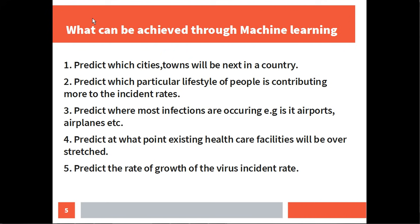You can also predict which particular lifestyle of people in a community is contributing more to the high incident rates. Thirdly, you can predict where most infections are occurring — is it airports, airplanes, other forms of transportation, bars, or clubs? You can predict.